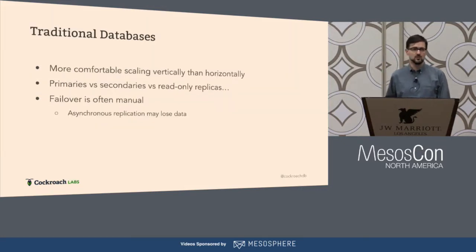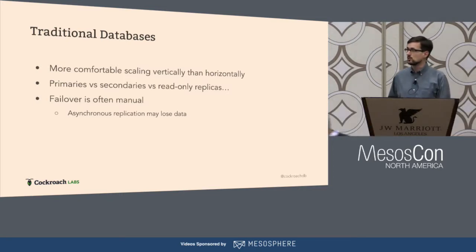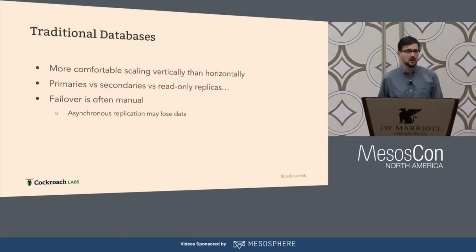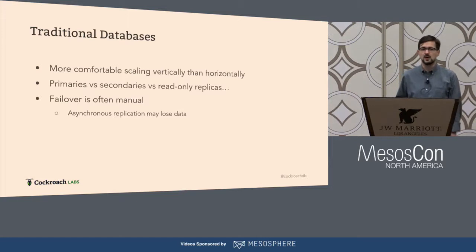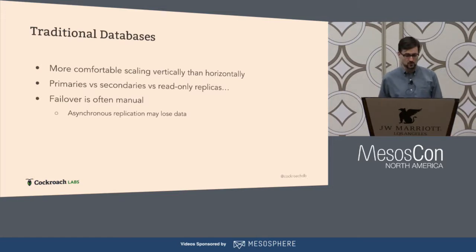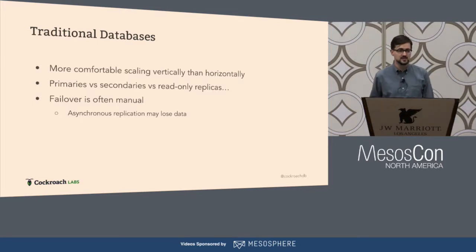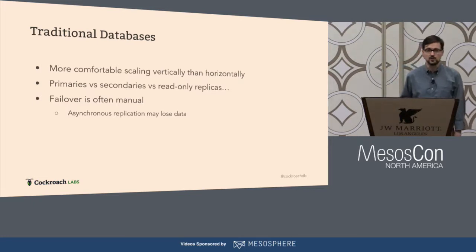Traditional databases have trouble with these characteristics. Traditional databases are more comfortable scaling vertically than horizontally. They make you distinguish between primaries and secondaries and read-only replicas and on and on. And frequently you have a manual and error-prone failure process, often involving asynchronous replication that may lose data when there's a failover.